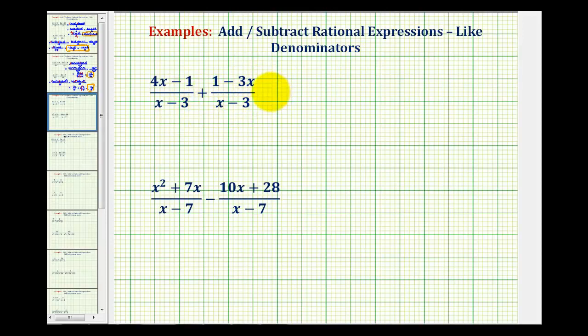For this first example, notice how both denominators are the quantity x minus 3. So it will stay at the quantity x minus 3, and then we'll add the numerators. We'll have the quantity 4x minus 1 plus the quantity 1 minus 3x.